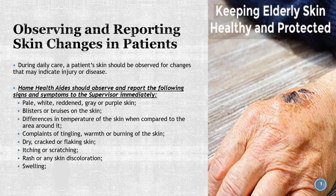Observing and reporting skin changes in patients during daily care: a patient's skin should be observed for changes that may indicate injury or disease. Home health aides should observe and report the following signs and symptoms to the supervisor immediately: pale, white, red, gray, or purple skin; blisters or bruises; differences in temperature of the skin when compared to the area around it; complaints of tingling, warmth, or burning; dry, cracked, or flaking skin; itching or scratching; rash or any skin discoloration; swelling.